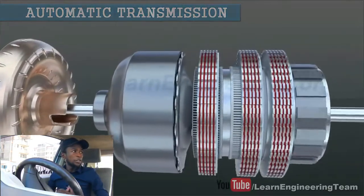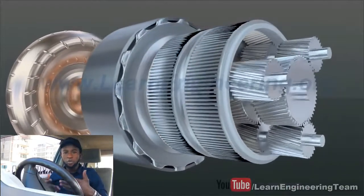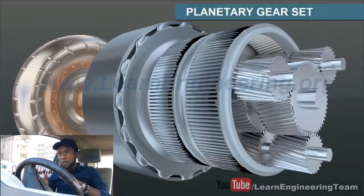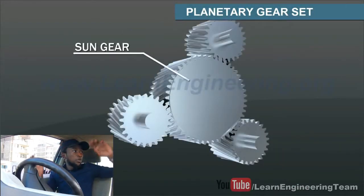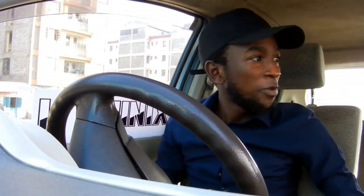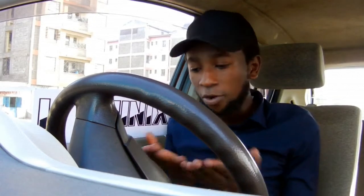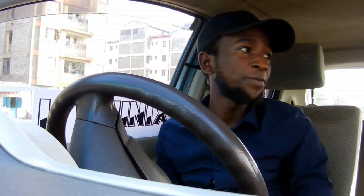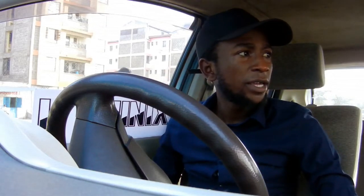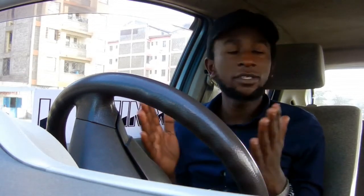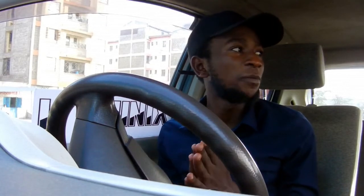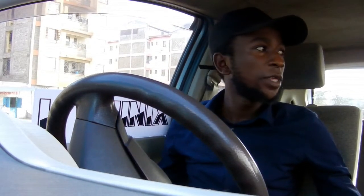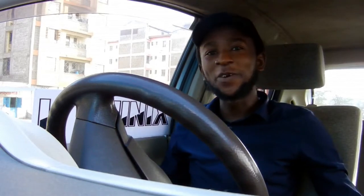An automatic transmission car is a car that automatically selects your gears according to your momentum. We'll dive deep into the automatic gearbox another time because that video will have a lot of technicalities. In this video, according to the title, we're going to cover some don'ts — things you're not supposed to do in an automatic transmission car. It's a short list of around seven things, so it won't be a long video.